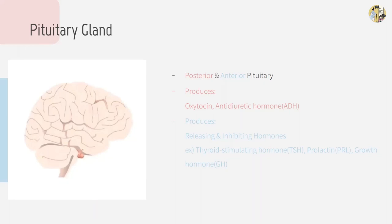The anterior pituitary gland mainly produces releasing hormones and inhibiting hormones. Releasing hormones stimulate secretion of a certain hormone, while inhibiting hormones inhibit the secretion of a certain hormone. One good example is thyroid stimulating hormone, or TSH, which stimulates the thyroid gland to produce thyroid hormone. Another example is growth hormone, GH — too much leads to gigantism, and too little leads to dwarfism. Prolactin is also produced by the anterior pituitary gland; it's not a releasing or inhibiting hormone, but stimulates milk production in mammals.